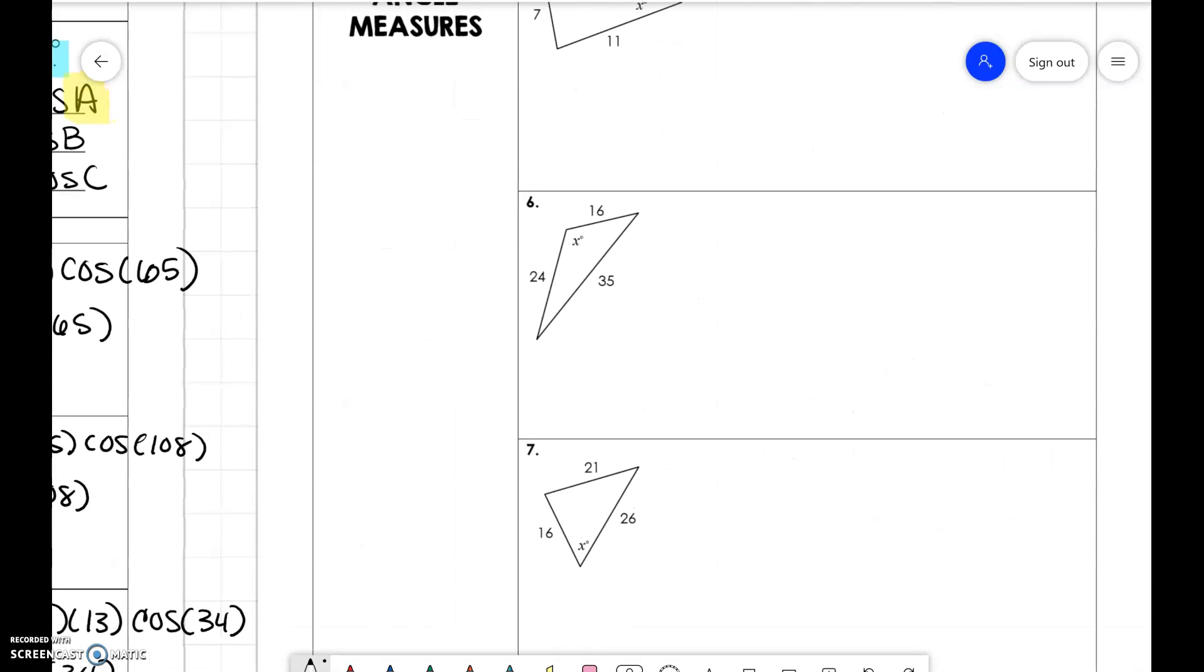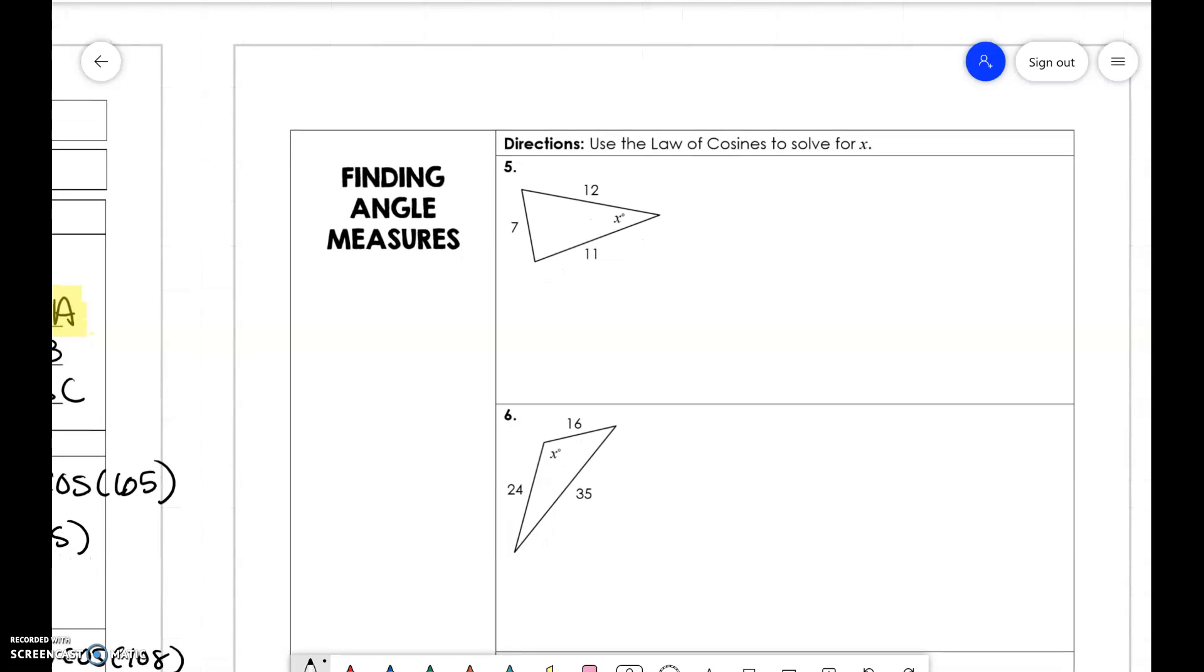So obviously if we know how to find a side length, we are going to now find an angle measure. So the same thing. If this is angle a, this is side a. So we're going to use 7 squared is equal to 12 squared plus 11 squared minus 2 times 12 times 11 cosine of x.